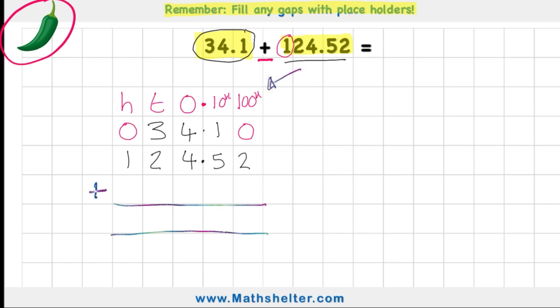So zero-hundredths added to two-hundredths is two-hundredths. Then in the tenths column, I have one and five, which is six. Make sure I put my decimal back. That's really important. And then in my ones column, four and four is eight. Tenths column, three and two is five. And my hundredths column, zero and one is one. So my answer to 34.1 added to 124.52 is 158.62.